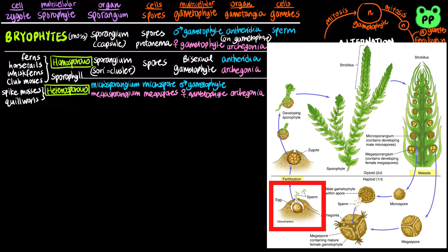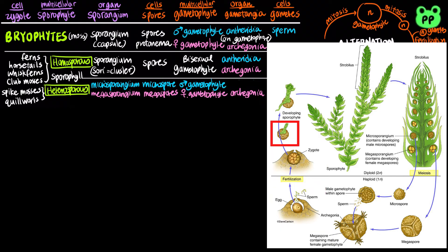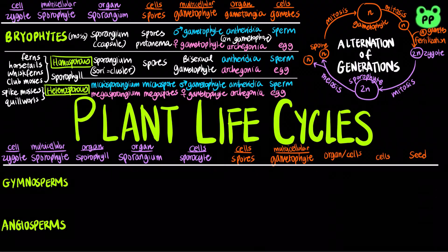Megaspores develop into female gametophyte through mitosis and produce egg and archegonia. Sperm fertilizes egg, producing a diploid zygote, which gives rise to a new sporophyte.